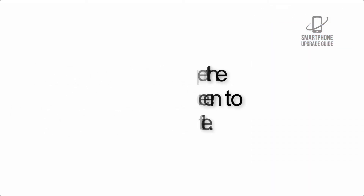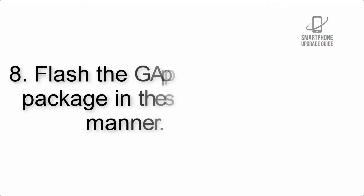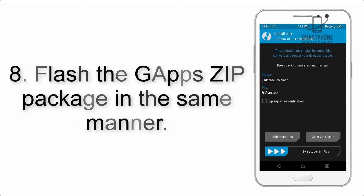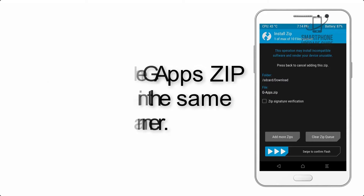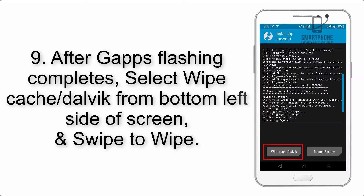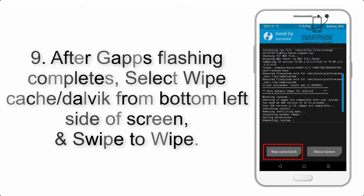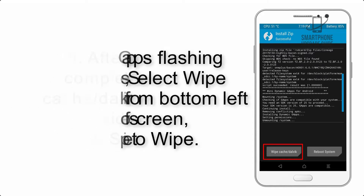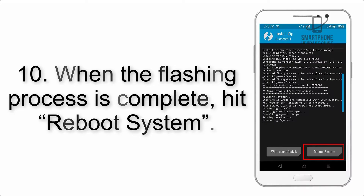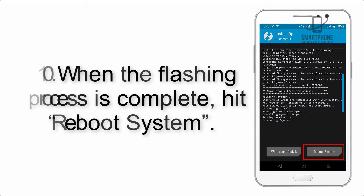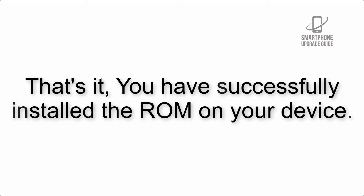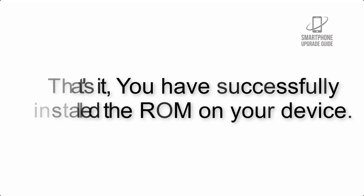Step 7: Swipe the button on the screen to install the ROM file. Step 8: Flash the GApps zip package in the same manner. Step 9: After GApps flashing completes, select Wipe Cache and Dalvik from the bottom left side of the screen and swipe to wipe. Step 10: When the flashing process is complete, hit Reboot System. You have successfully installed the ROM on your device.